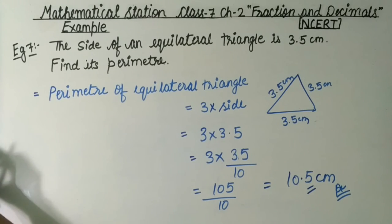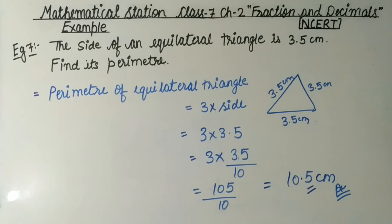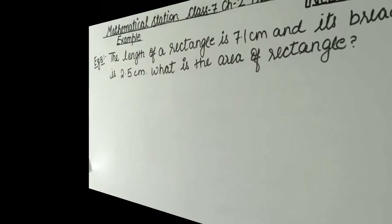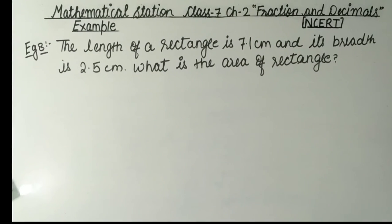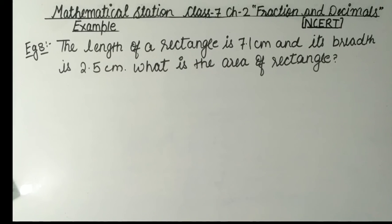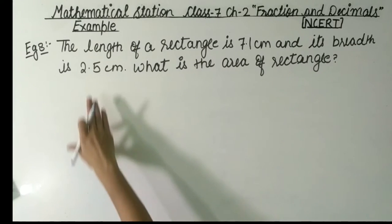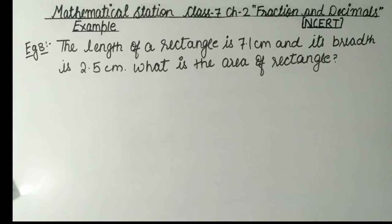That was example number 7. Now we will go to the next question — example number 8. The length of a rectangle is 7.1 cm.